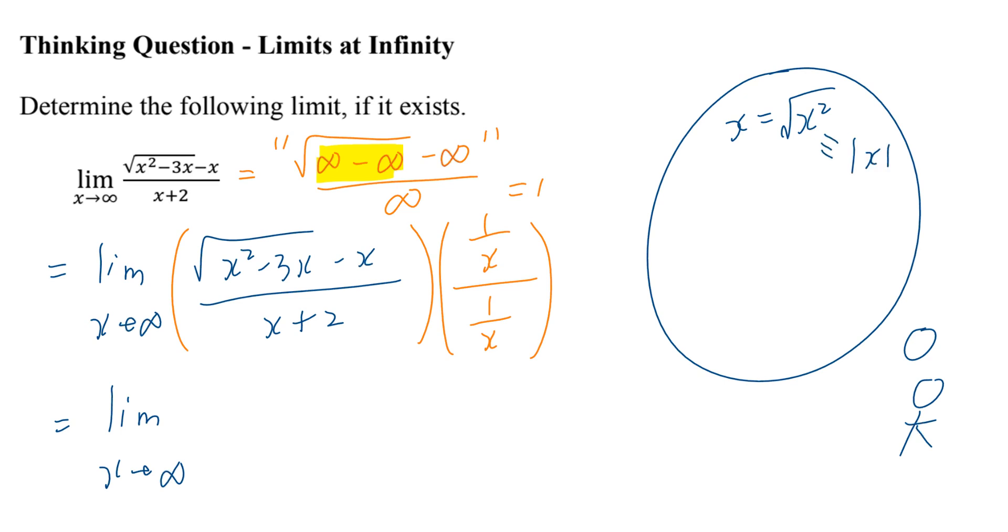To be very technical, this is the definition of the absolute value of x. So x is not really the square root of x squared, but it's good enough for applying this idea for this limit. Likewise, when you think about 1 divided by x, you can think of this as a square root of 1 divided by x squared.